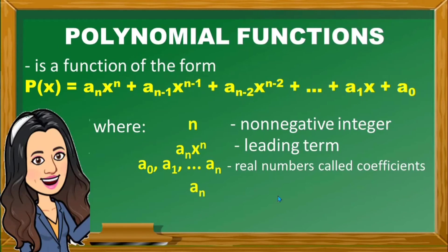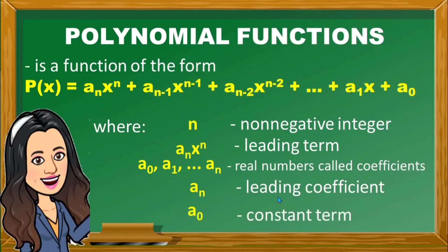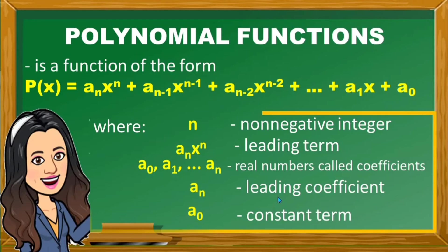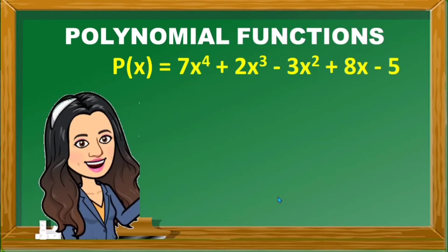Next, a sub n is the leading coefficient. The leading coefficient is the numerical coefficient of the leading term. And then a sub 0 is the constant term — the term of degree 0, in which the variable does not appear. Take note of these terms. Let us have an example.